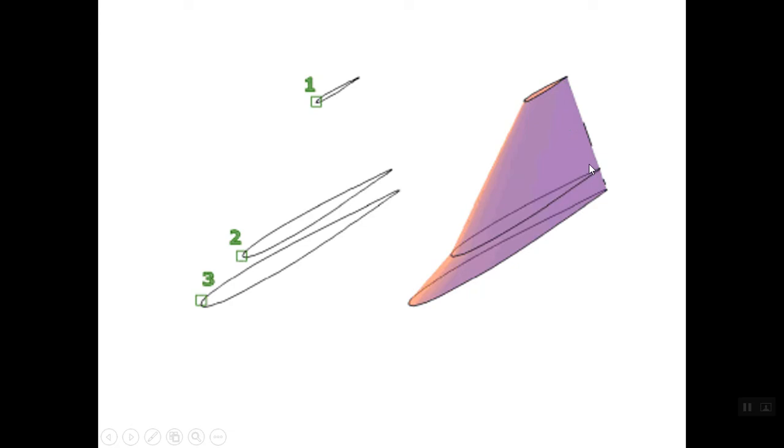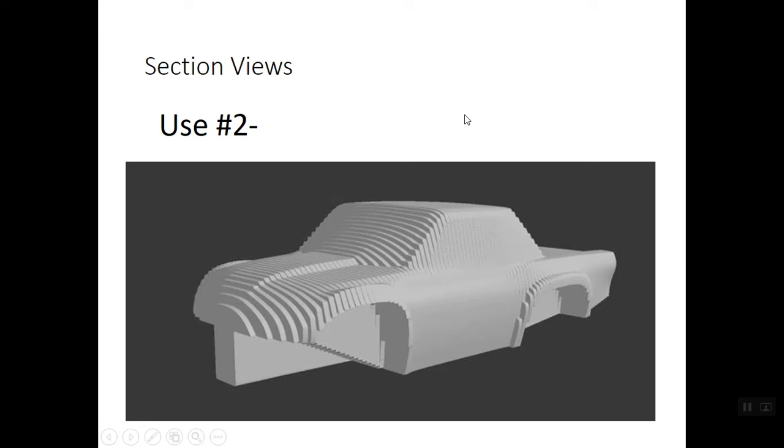We see an example here with this aerofoil for an airplane. The fin is made of three different cross-sections that are welded or melded together.